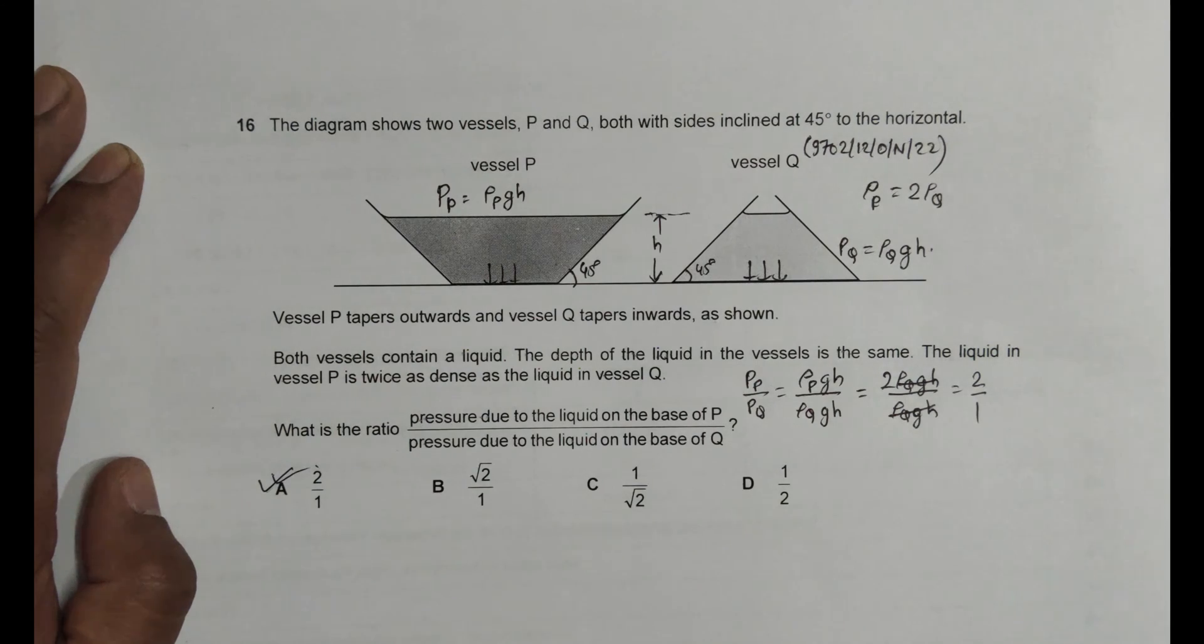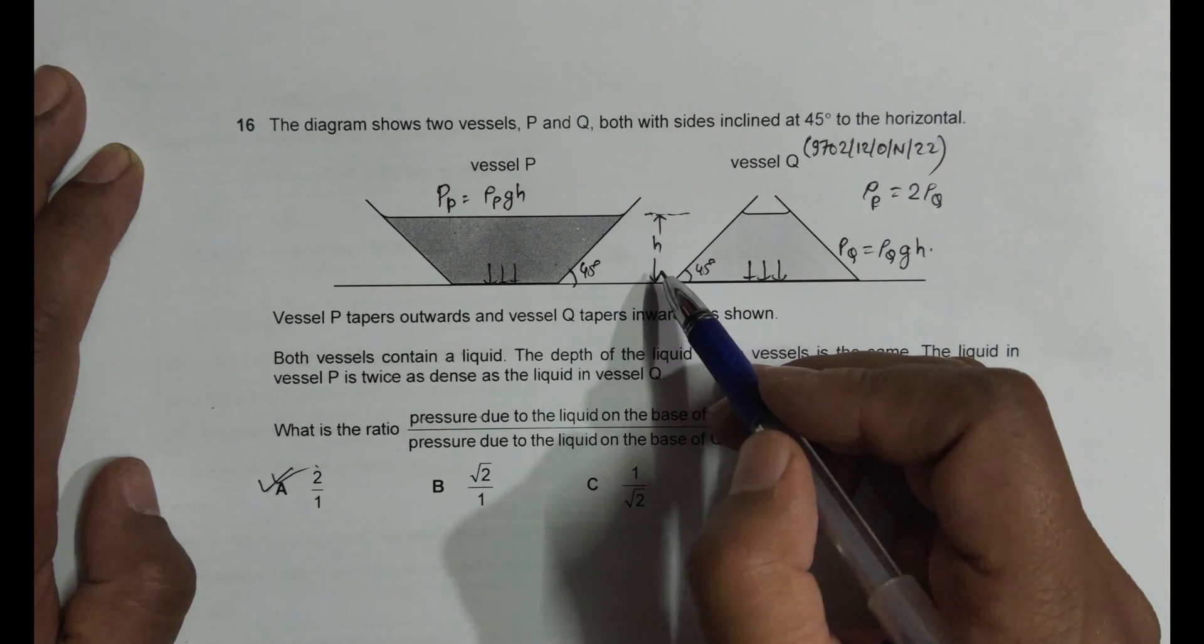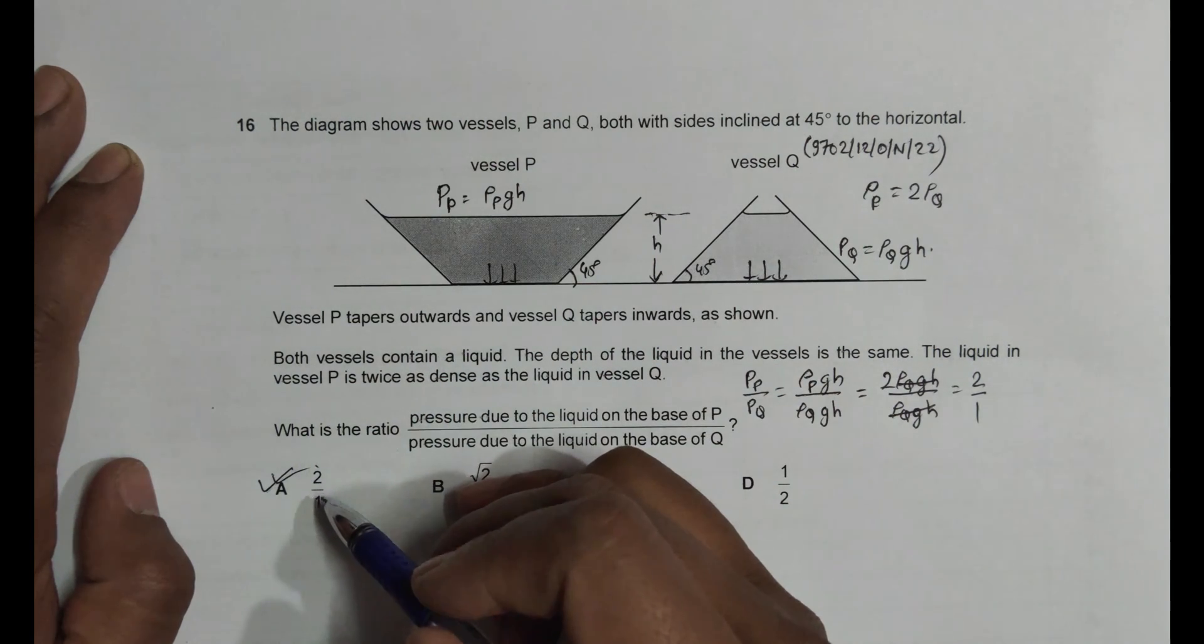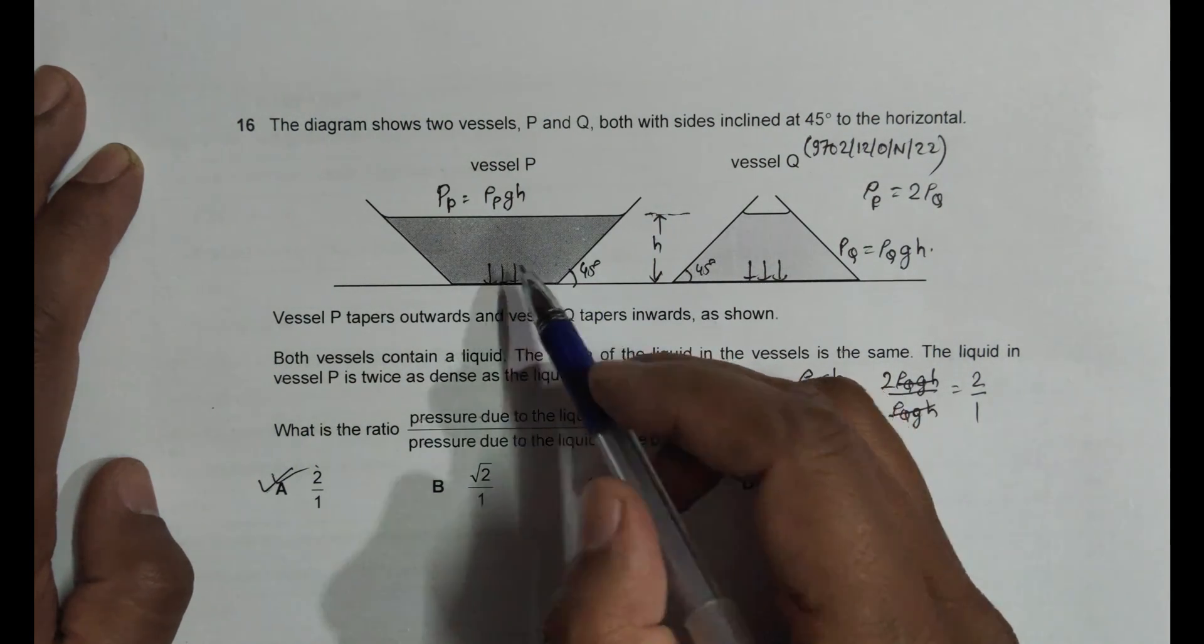So what we need to remember here is the pressure depends on height and density. Height is same, density is twice here, so pressure also becomes twice.